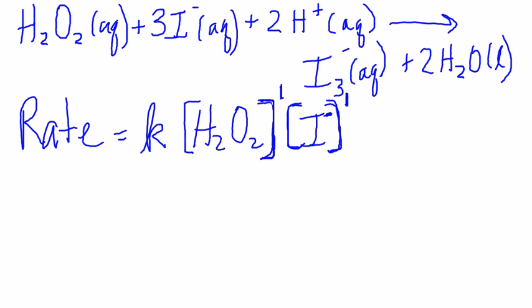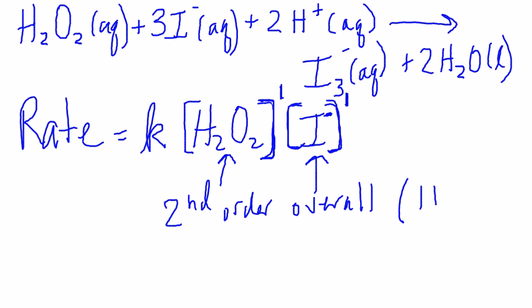So, first order with respect to the hydrogen peroxide, first order with respect to the iodide ion, and second order overall, when you add them together. And, that is because 1 plus 1 is equal to 2.